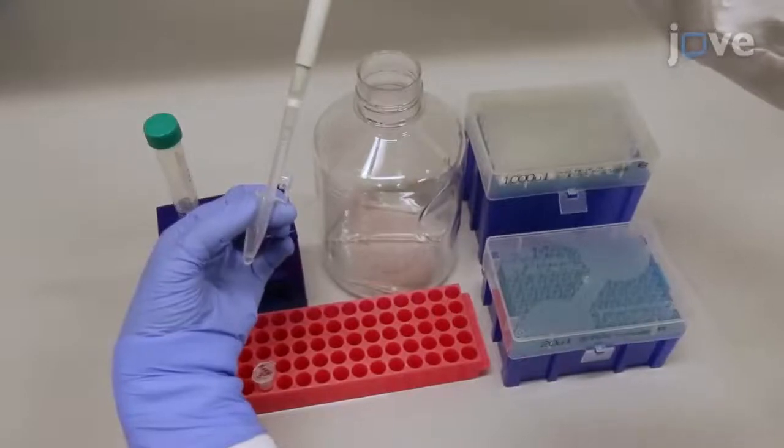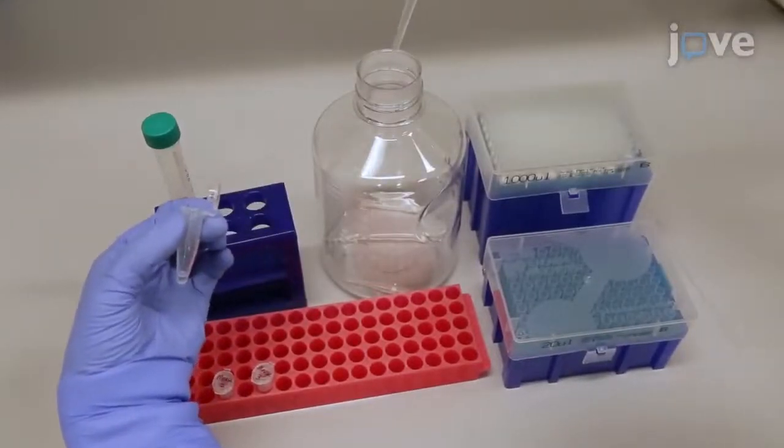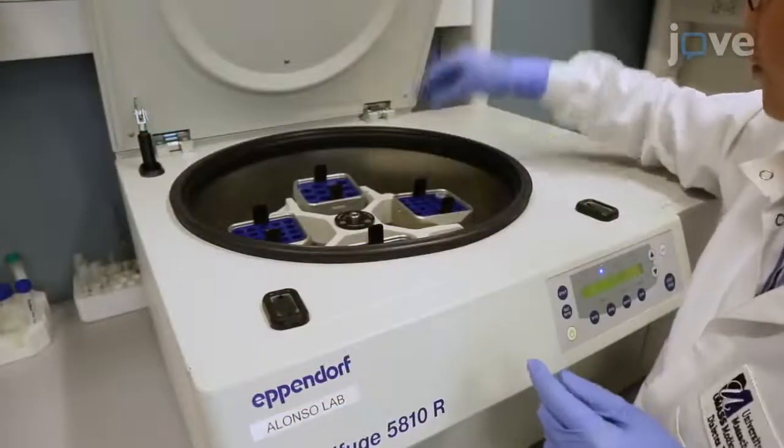Remove the supernatant. Repeat this entire PBS wash process for a total of 2 wash cycles.